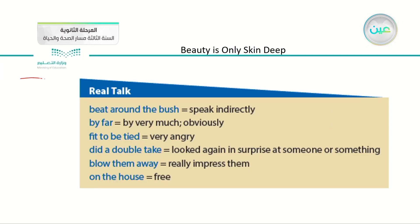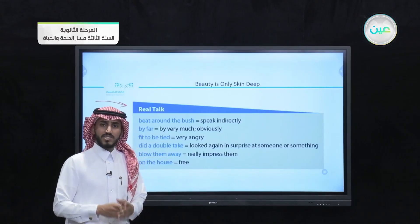Now the Real Talk part. First expression: 'beat around the bush' means speak indirectly. Second: 'by far' means by very much, or obviously. Third: 'fit to be tied' means very angry or annoyed about something. Fourth: 'did a double take' means looked again in surprise at someone or something. Fifth: 'blow them away' means to impress people, make them amazed by the way you look or talk. Sixth: 'on the house' means free — when the owner of a place says it's on the house, you can take it for free.